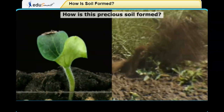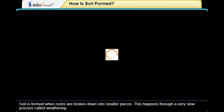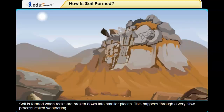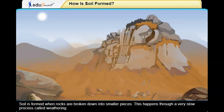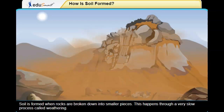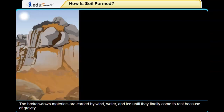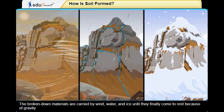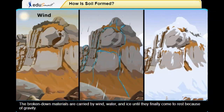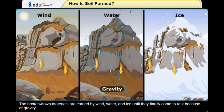How is this precious soil formed? Soil is formed when rocks are broken down into smaller pieces. This happens through a very slow process called weathering. The broken down materials are carried by wind, water, and ice until they finally come to rest because of gravity.